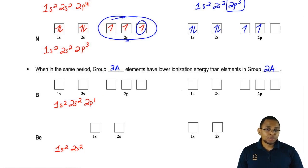They're both in the same period, so this rule applies to them. This would be up, down, up, down, up. This would be up, down, up, down.